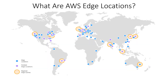What are AWS edge locations? Edge locations are part of the content delivery network web service called Amazon CloudFront, used to deliver content to end users with lower latency. Amazon CloudFront uses a global network of 217 points of presence, consisting of 205 edge locations and 12 regional edge caches in 84 cities across 42 countries.